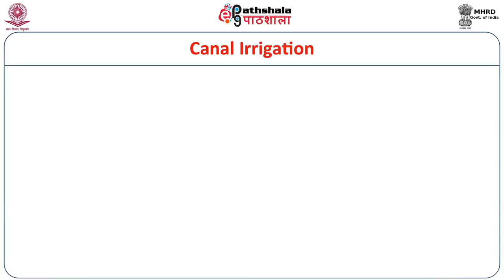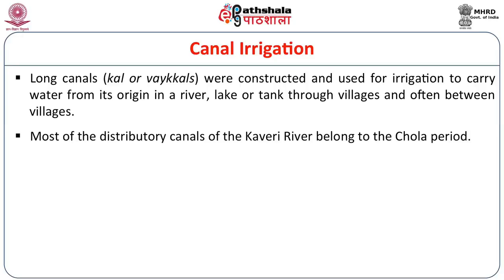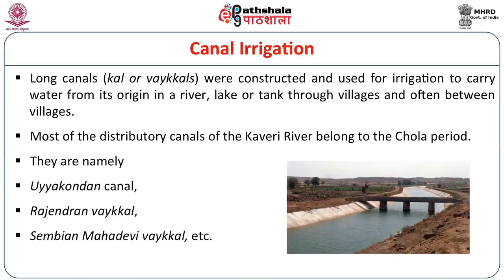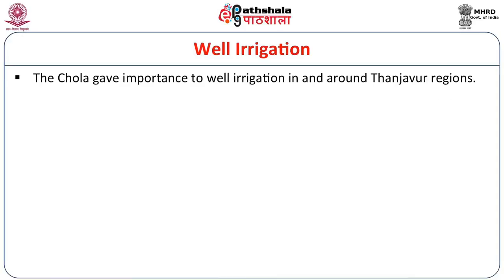Long canals were constructed and used for irrigation to carry water from rivers, lakes, and tanks. Most of the distributary canals of the Kaveri River belong to the Chola period — notably Uyakundan Canal, Rajendra Vaikal, and Sembian Mahadevi Vaikal. In the artificial irrigation system, well irrigation is also most important; the Cholas gave importance to well irrigation in and around Tanjavur regions.